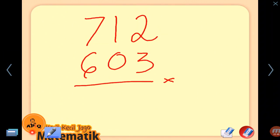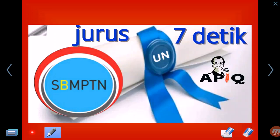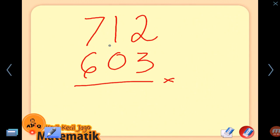And this: 712 multiplied by 603. Okay, let's begin. The first step: 2 times 3, we get 6. Second: 1 times 3 is 3, 0 times 2 is 0, 3 plus 0 is 3.